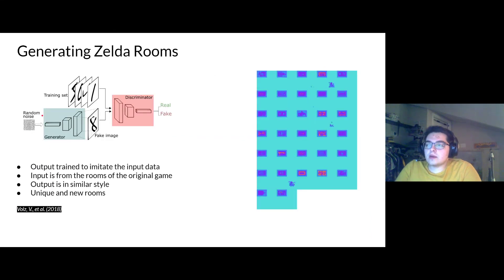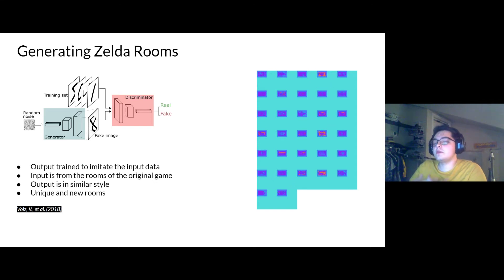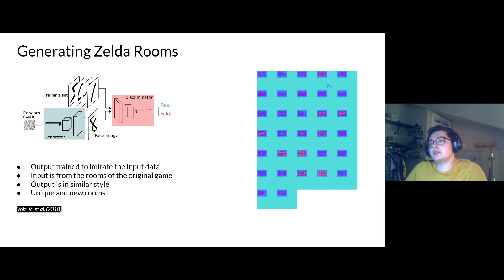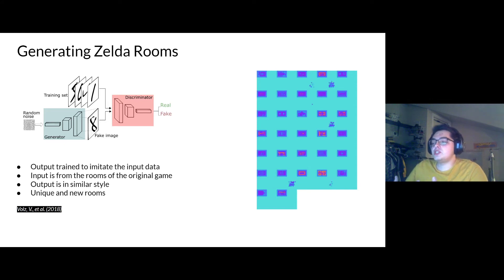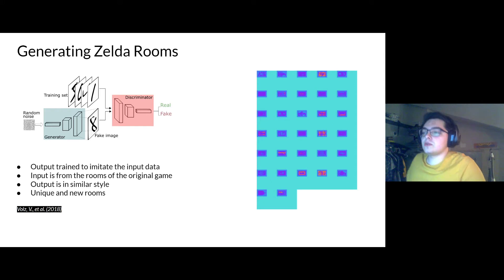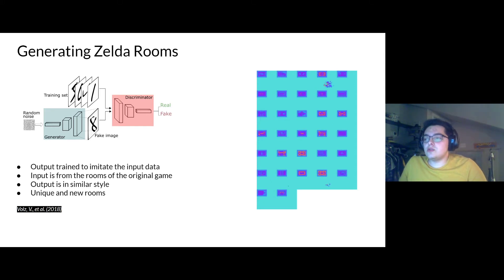Now that we have the dungeon layout, we need to place rooms inside it. We use a Generative Adversarial Network to generate these rooms. We take the original room data for The Legend of Zelda, put that into the GAN, and the GAN generates output similar to the original input. With this method, we can create unique and new rooms similar to the original.